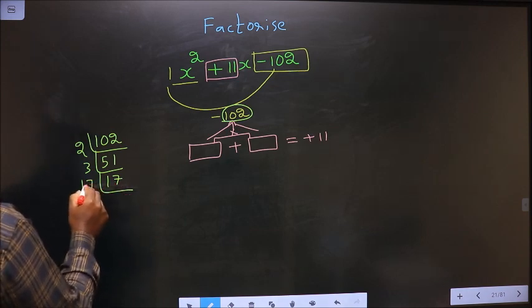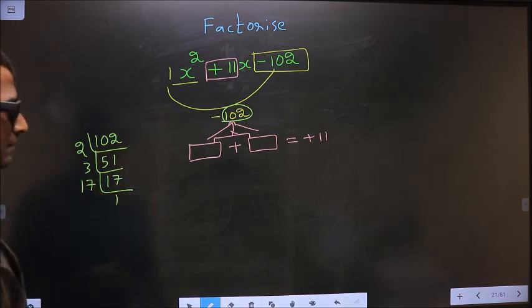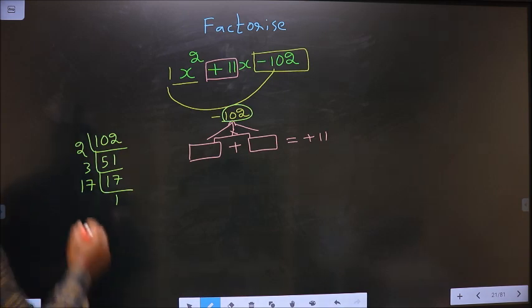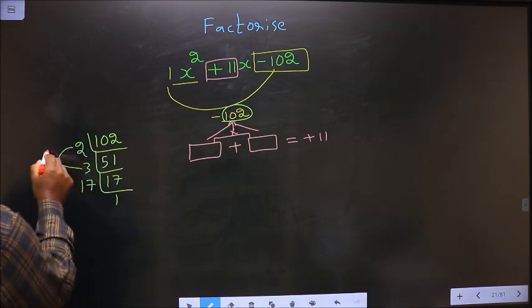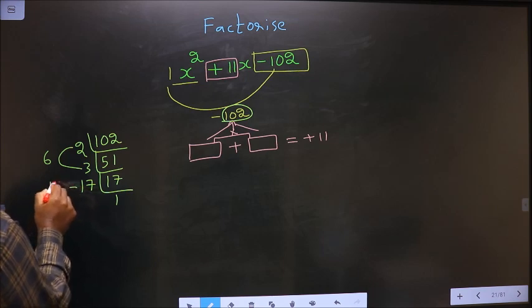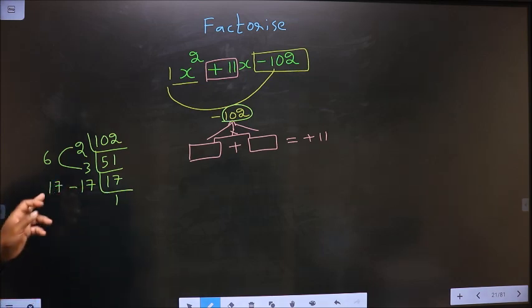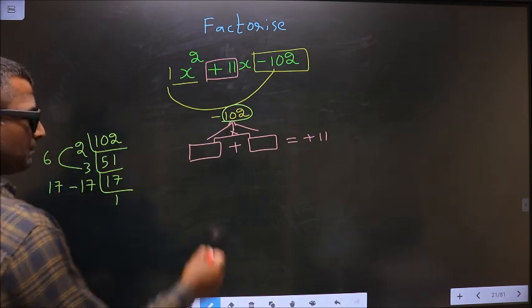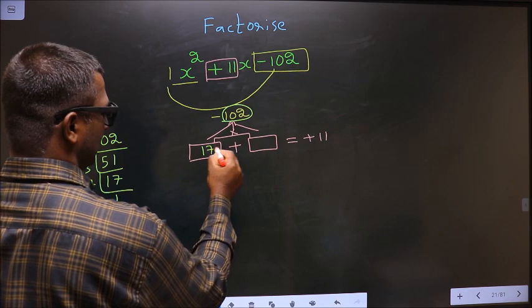17 is a prime, so take 17 and 1. So now the two numbers should be 2 into 3, which is 6, and 17. 17 minus 6 is 11. 17 into 6 is 102. So 17 and 6.